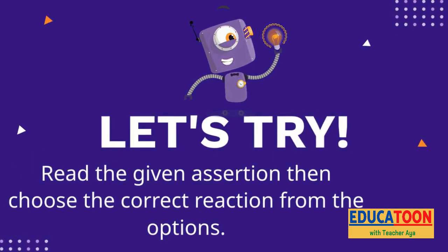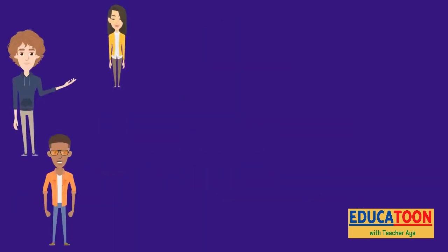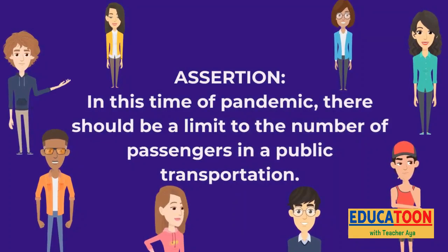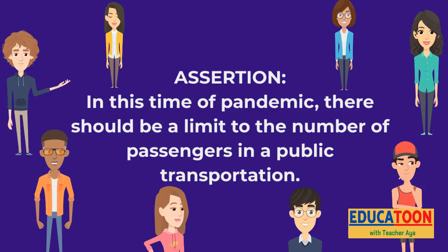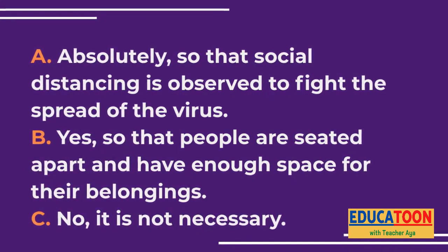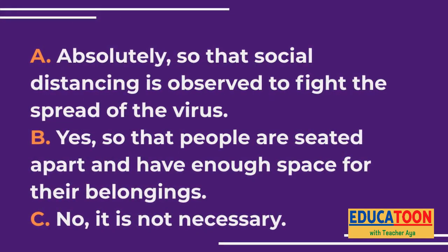Let's now try. Read the given assertion, then choose the correct reaction from the options. In this time of pandemic, there should be a limit to the number of passengers in public transportation. What do you think is the appropriate reaction for this assertion? A: Absolutely, so that social distancing is observed to fight the spread of the virus. B: Yes, so that people are seated apart and have enough space for their belongings. Or letter C: No, it is not necessary.